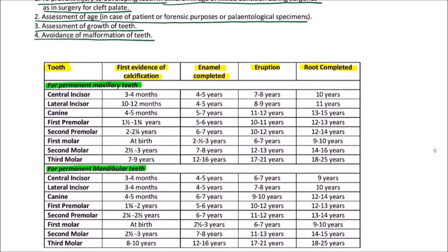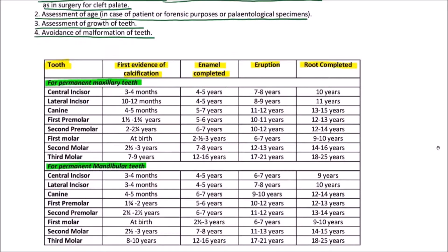This table gives the timings for permanent dentition chronology. For permanent maxillary teeth, the central incisor has its first evidence of calcification at 3 to 4 months, enamel is completed by 4 to 5 years, eruption occurs by 7 to 8 years, and the root is completed by 11 years.